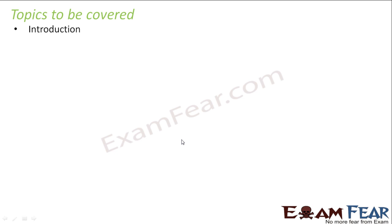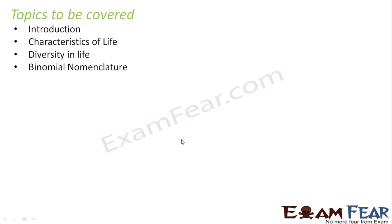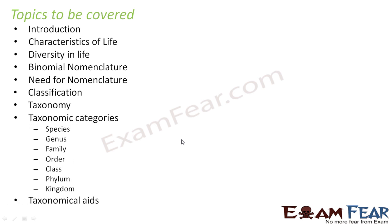Topics to be covered in this lesson are: Introduction, Characteristics of life, Diversity in life, Binomial nomenclature, Need for nomenclature, Classification, Taxonomy, Taxonomic categories — wherein we will talk about Species, Genus, Family, Order, Class, Phylum and Kingdom — and the last one, Taxonomical Aids.